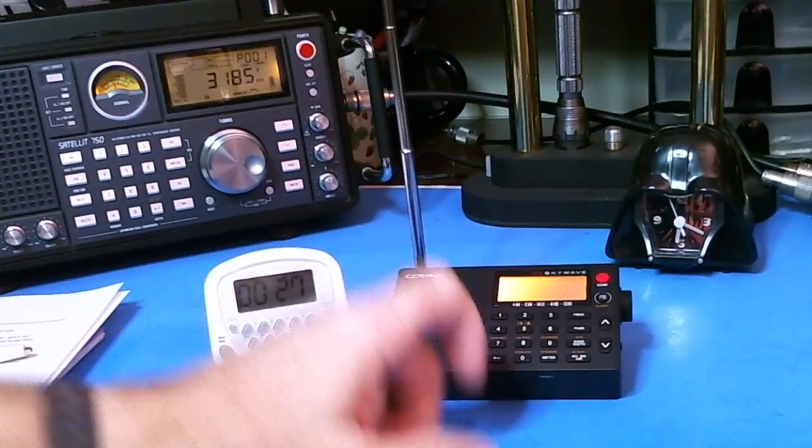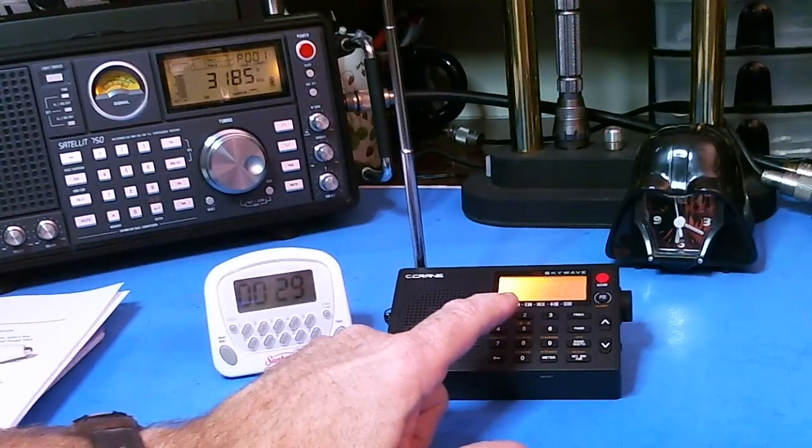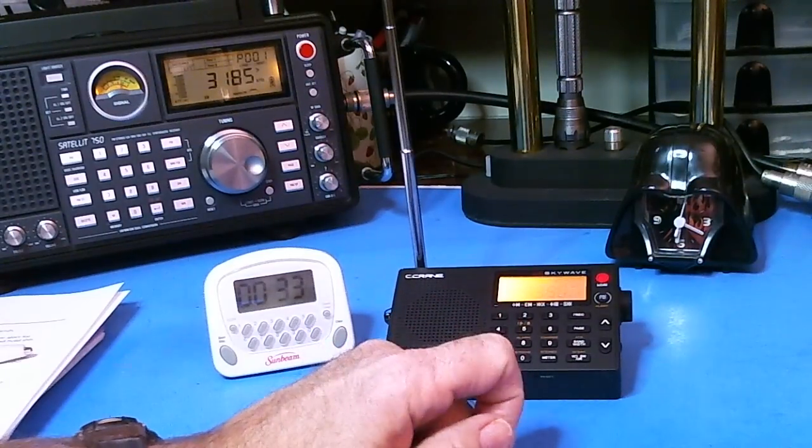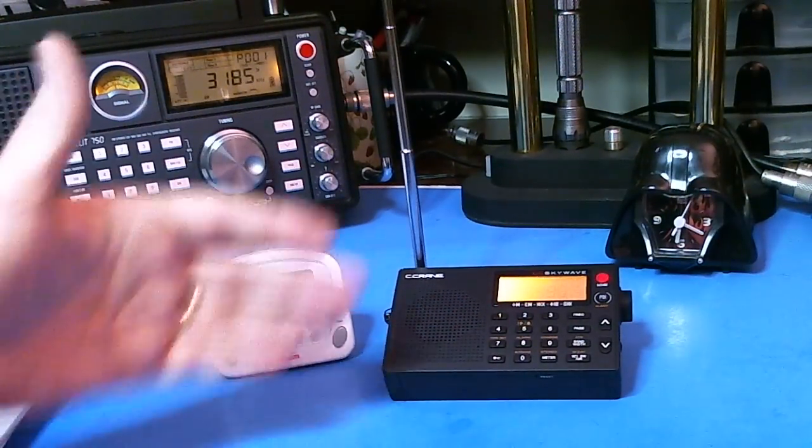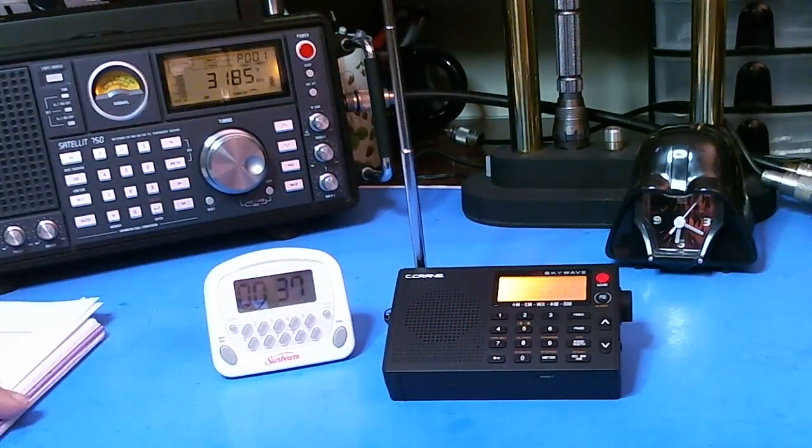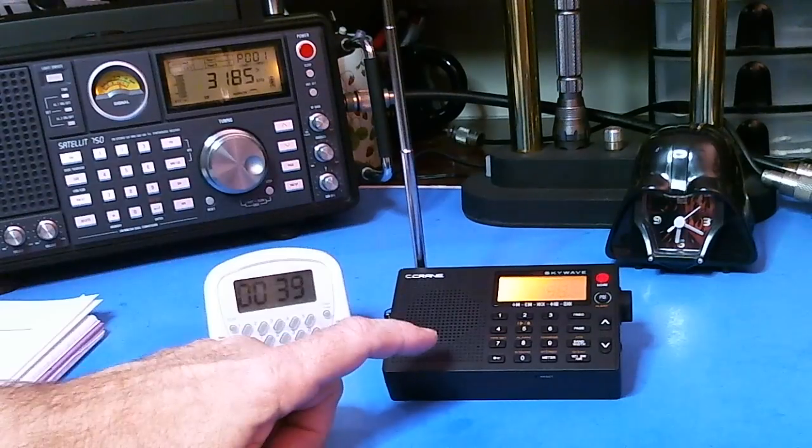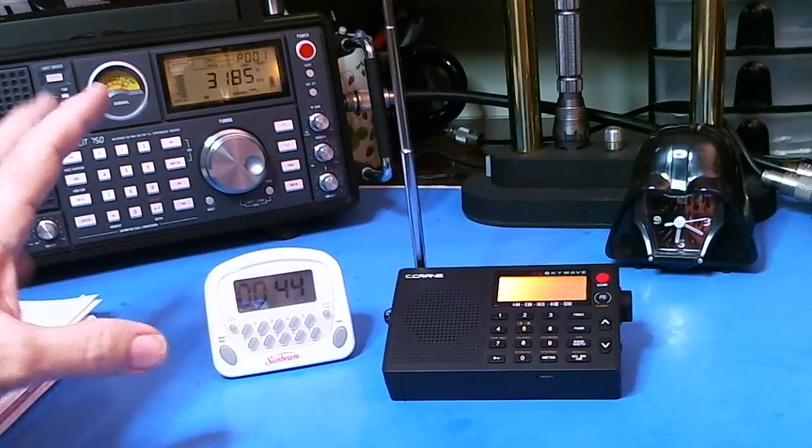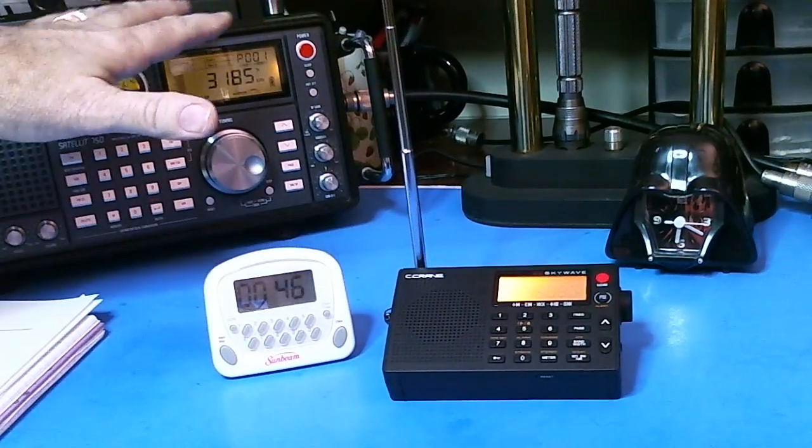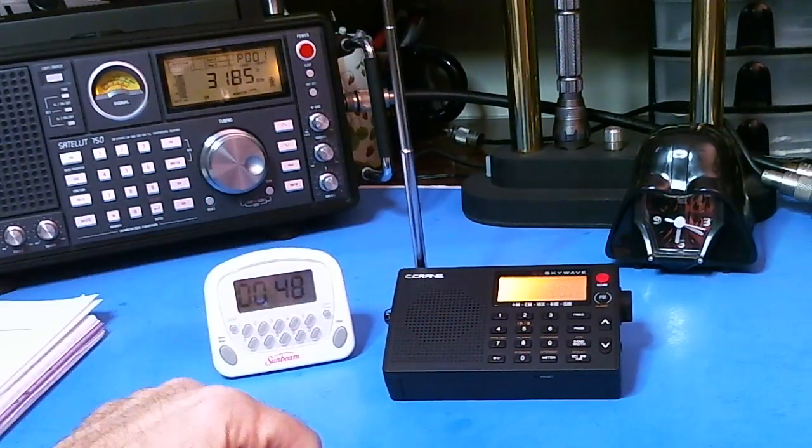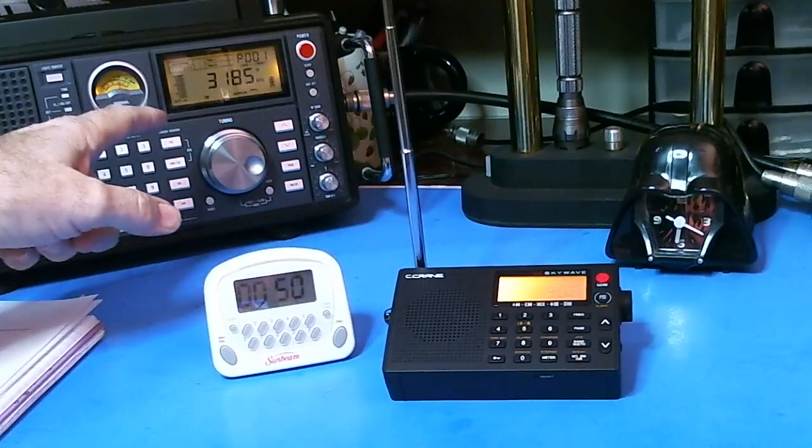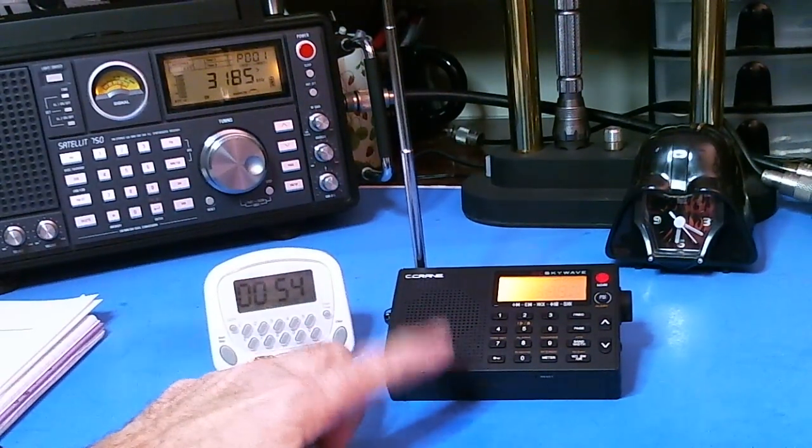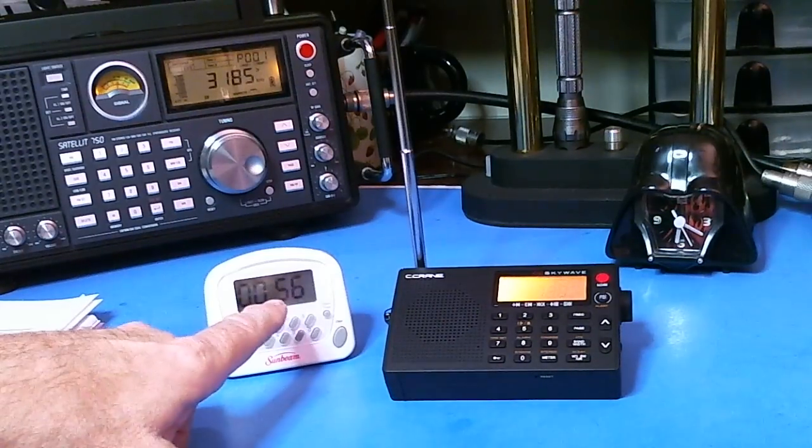Like I say, I'm just using the telescopic antenna on the Skywave, which like I said before is pretty short - it's only 16 inches, so that's a disadvantage right there. But it's scanning, it's already up to 7.5 megahertz and then moving right along.